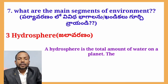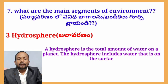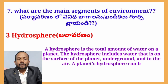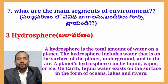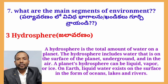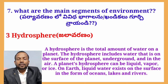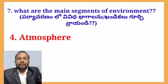Approximately 97% of water on earth is saltwater found in the oceans, leaving only about 1% as fresh water accessible for use. The fourth segment of the environment is the atmosphere, which is the gaseous envelope surrounding the earth.